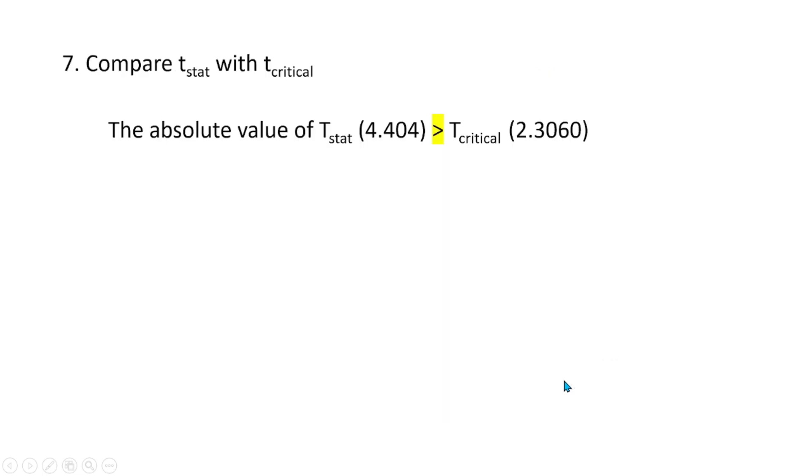Step 7. Compare the absolute value of t-statistics with t-critical value. In this case, the absolute value of t-statistics which is 4.404 is greater than the t-critical 2.3060.